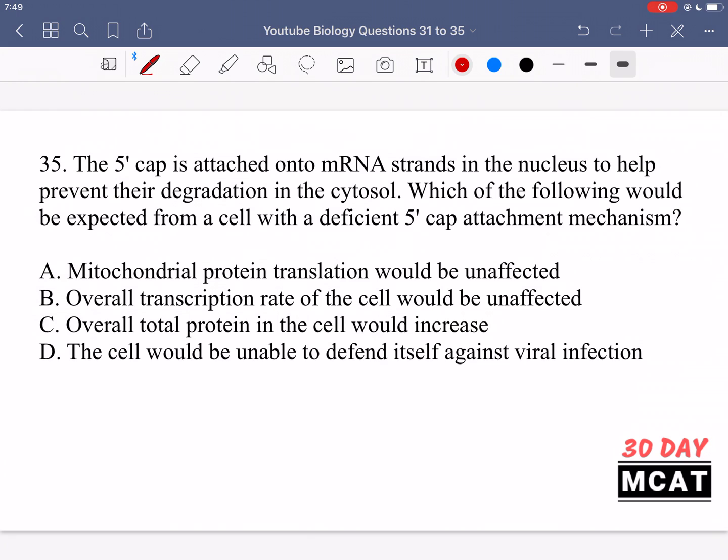In question 35, it says the five prime cap is attached onto mRNA strands in the nucleus to help prevent their degradation in the cytosol. Which of the following would be expected from a cell with a deficient five prime cap attachment mechanism? You should know that the five prime cap is added to mRNA to prevent degradation. Also, you should know that it happens in the nucleus.